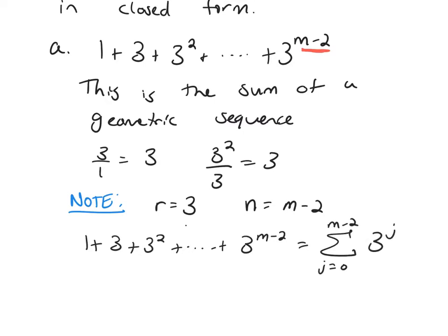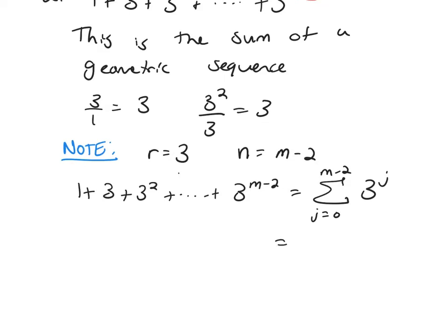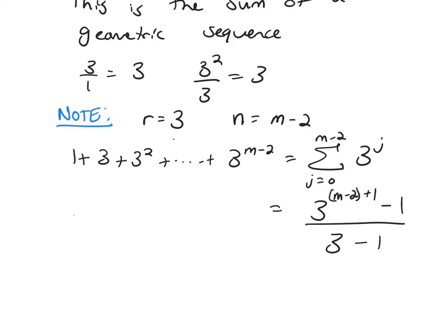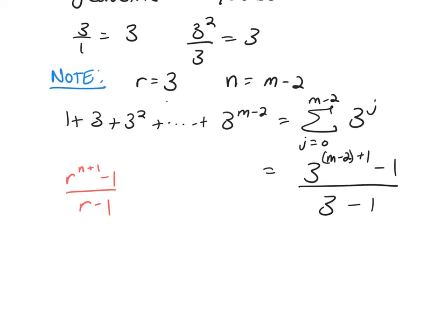So using our summation formula, this is the sum from j equals 0 to m minus 2, 3 to the j. So I use our formula, n was m minus 2, plus 1, minus 1, over 3 minus 1. So this is that formula, r to the n plus 1 minus 1 over r minus 1. So if I simplify this down, this would be 3 to the m minus 1 minus 1 over 2.